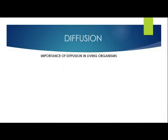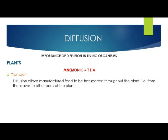Now, let's look at how diffusion is important in living organisms, starting with plants. To remember these important things, we can use the mnemonic TEA. The T in TEA is for transport. Diffusion aids the transport of manufactured foods throughout the plant — that is, from the leaves to other parts of the plant.